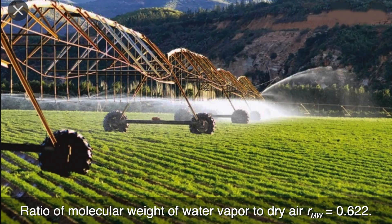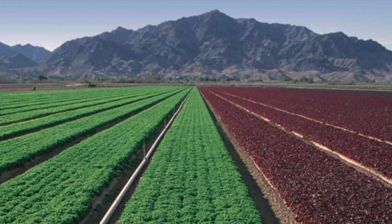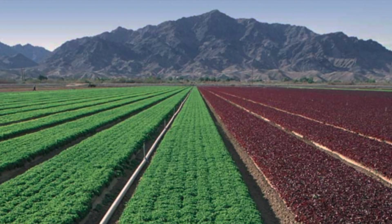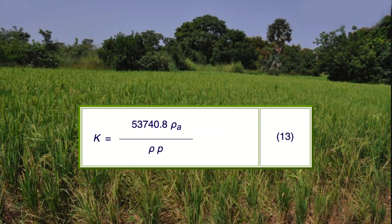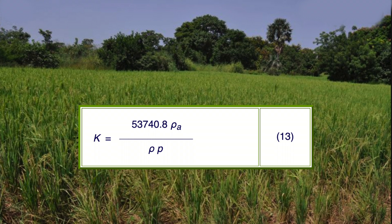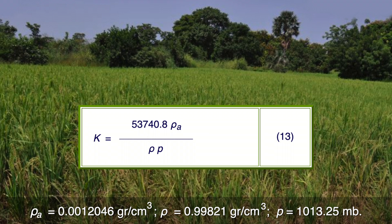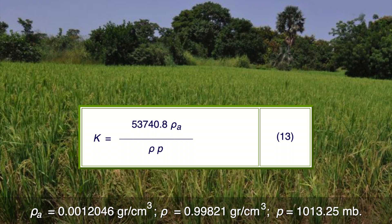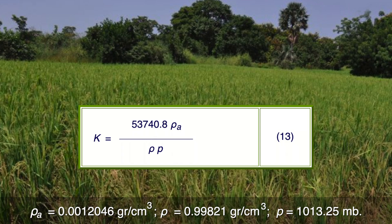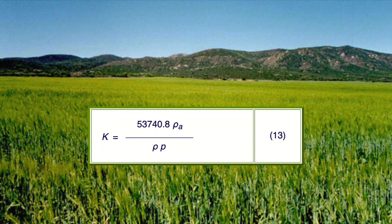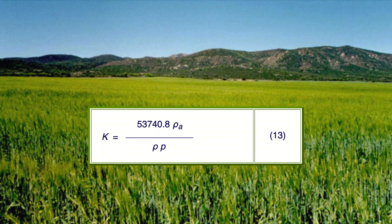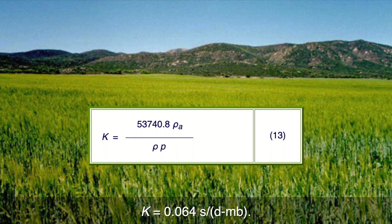Replacing r sub mw equal to 0.622 in equation 12, the constant k remains in units of seconds per day per millibar. At temperature equal to 20 degrees Celsius and standard atmospheric pressure (sea level), rho sub A equal 0.0012046 grams per cubic centimeter, rho equal 0.99821 grams per cubic centimeter, and p equal 1013.25 millibars. Thus, the constant k in equation 13 reduces to k equals 0.064 seconds per day per millibar.